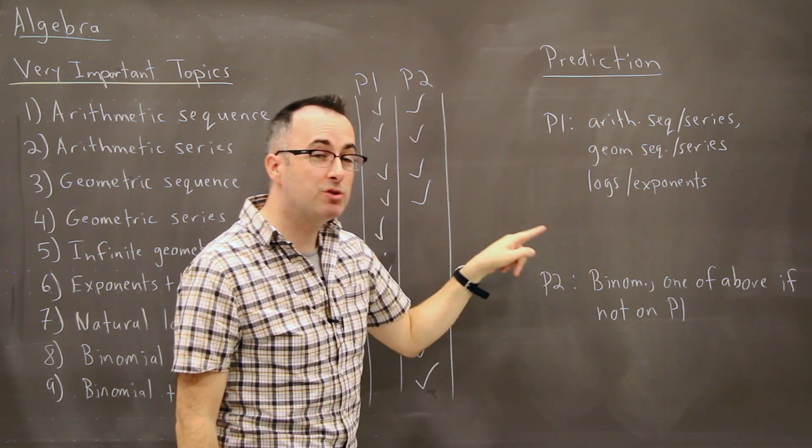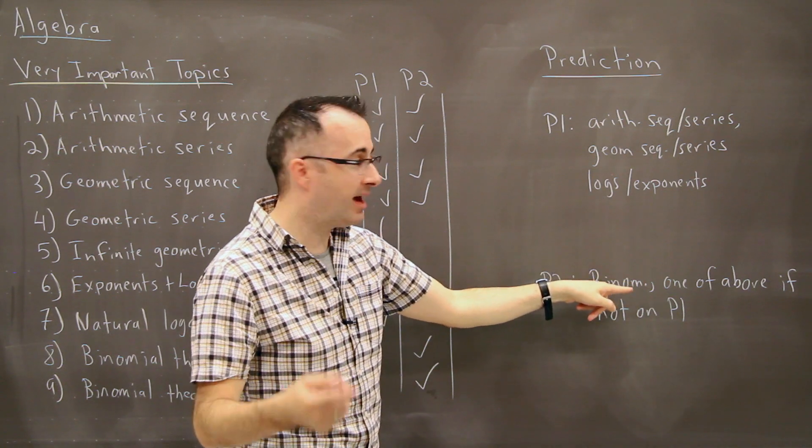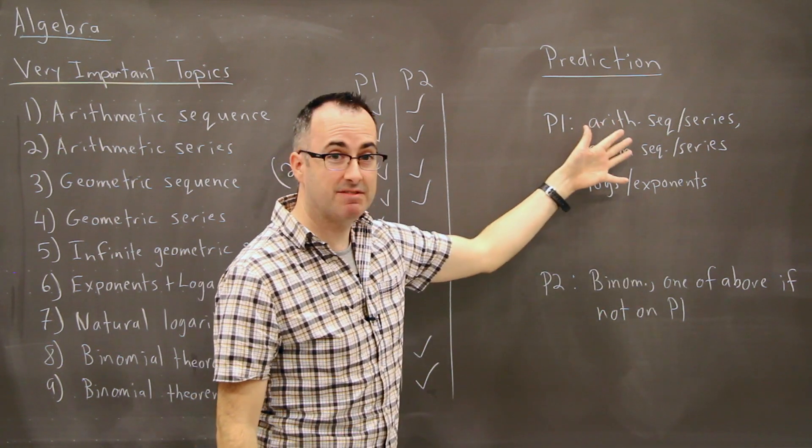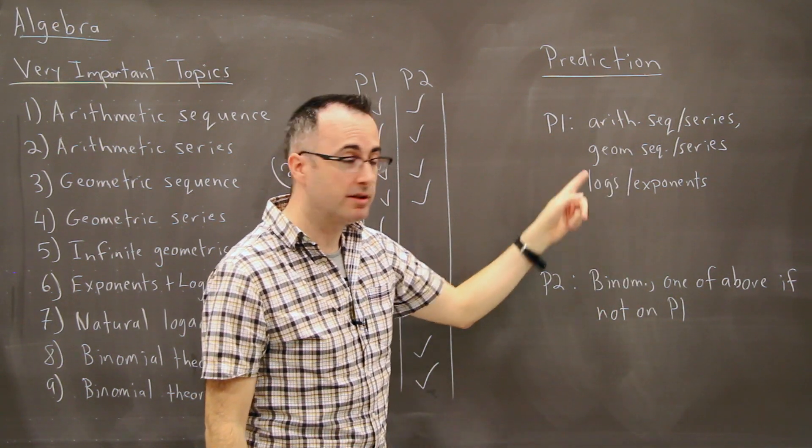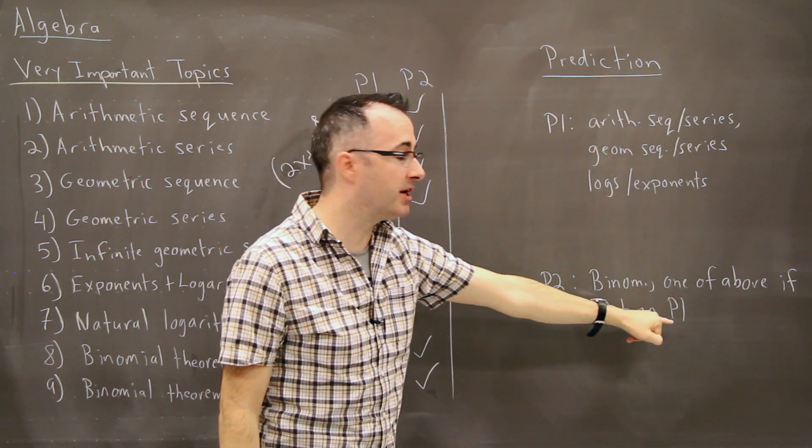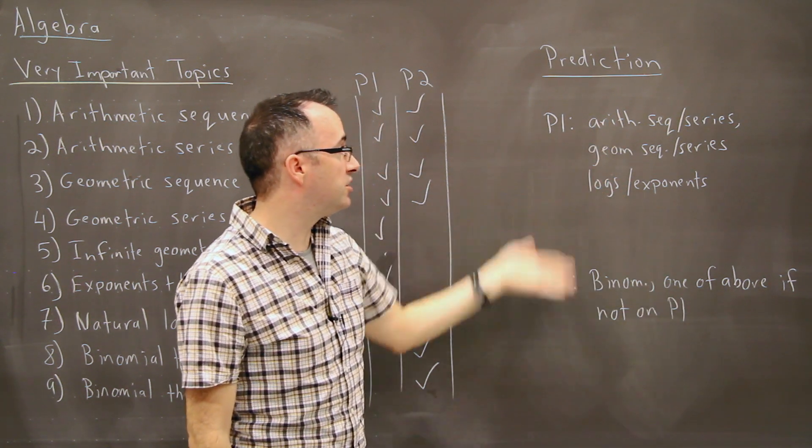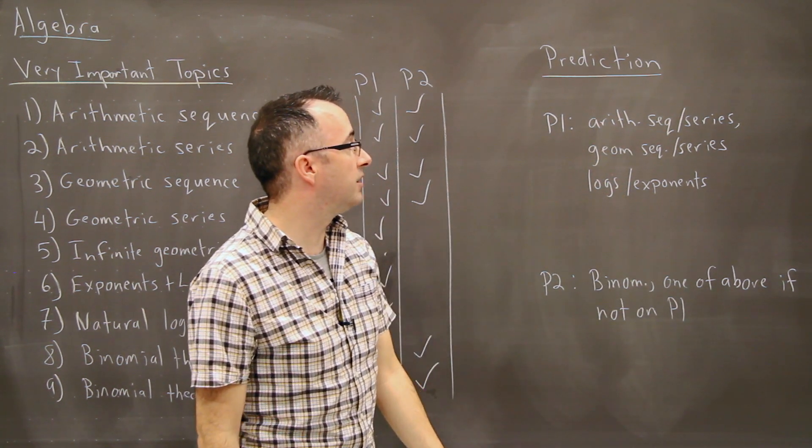And for Paper 2, you're virtually guaranteed to have a binomial expansion. And you'll probably have one of these ones if it hasn't already shown up in Paper 1. So for example, if you had arithmetic sequence in Paper 1, you'll probably have geometric in Paper 2 or vice versa. So this hopefully should give you an idea of what to look at for your exam.